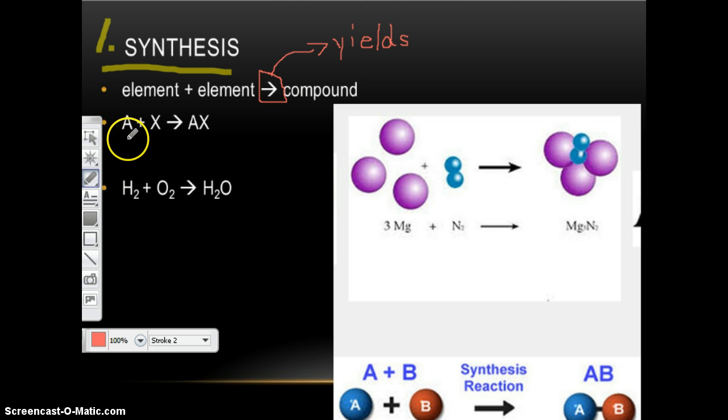And here's the way that we can abbreviate. We can say A, as in like in math class how you use X for a variable. It's the same idea. So A plus X yields AX. So any element plus any element yields that compound.